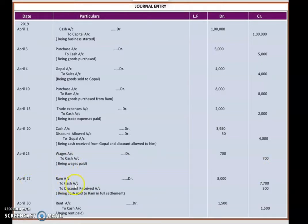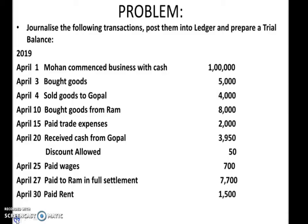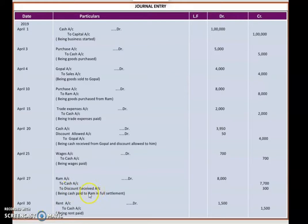April 27: Paid to Ram in full settlement 7,700. We purchased goods from Ram worth 8,000 but are paying 7,700, so 300 is discount received by us. Ram account debited 8,000 to cash account 7,700 and discount received 300, being cash paid to Ram in full settlement. April 30: Rent paid — rent account debited to cash account 1,500, being rent paid. These are all the journal entries as per the transactions, following the rules of debit and credit.